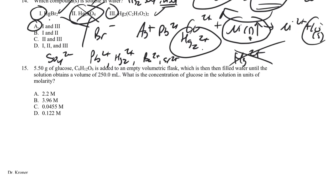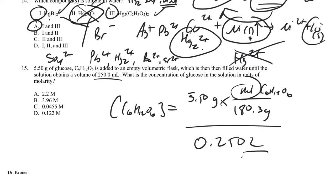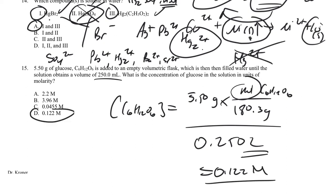Problem 15: 5.5 grams of glucose (C₆H₁₂O₆, molar mass 180.3 g/mol) added to a 250 mL volumetric flask. Molarity = moles / volume in liters = (5.5 / 180.3) / 0.250 = 0.122 M. Fairly straightforward — just convert grams to moles using molar mass, then divide by volume in liters.